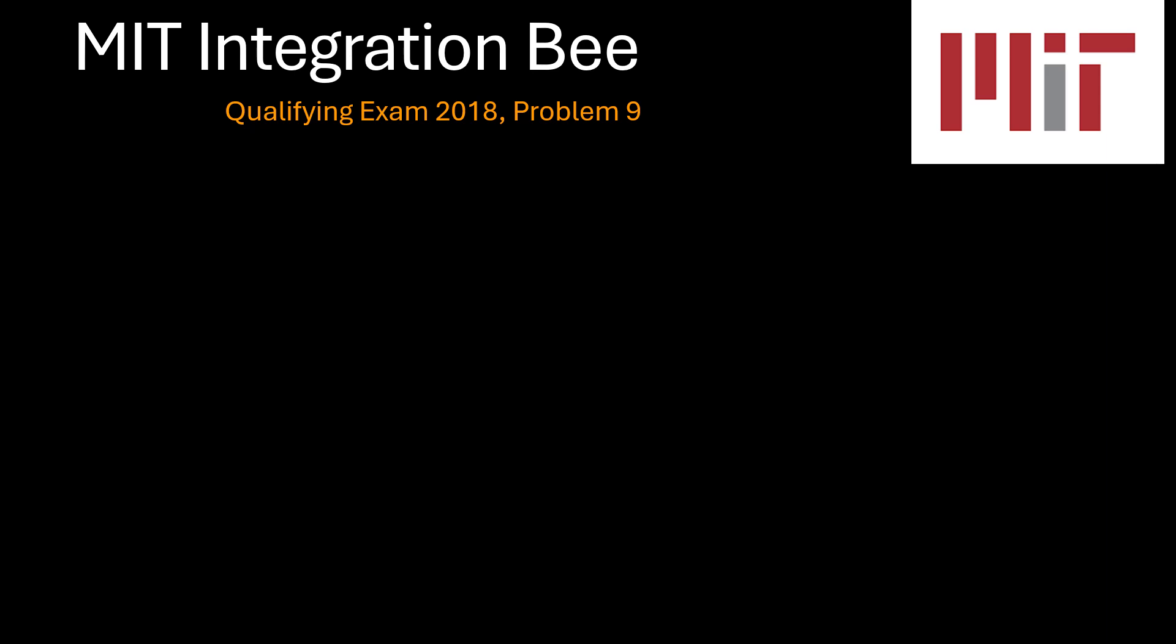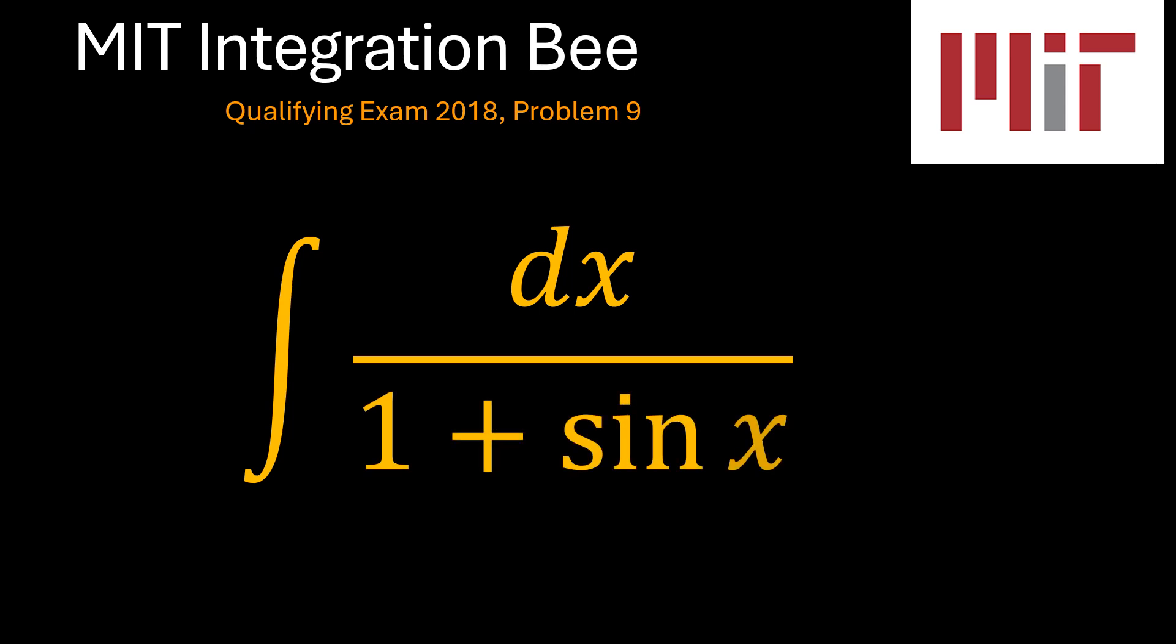This is problem number 9 of the MIT Integration Bee Qualifying Exam 2018, which is an indefinite integral of 1 over 1 plus sine x. So let's see how we may be able to solve this problem.